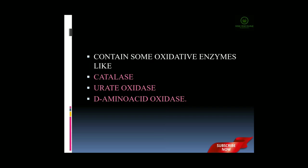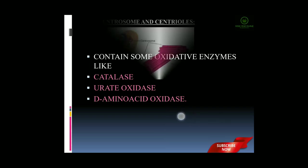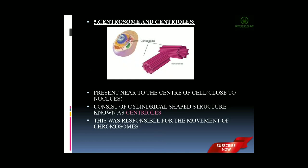The next part present in the cytoplasm is the centrosome and the centrioles. Here I show the diagram of a centrosome and centriole. It is present near the center of the cell, closest to the nucleus. It consists of a cylindrical-shaped structure known as the centriole. This centrosome is responsible for the movement of chromosomes during the cell division stage.